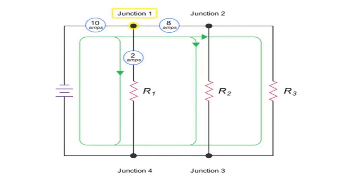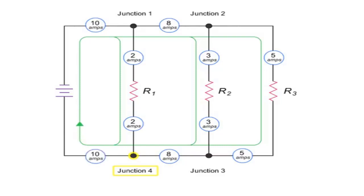The circuit branches again at junction 2, and the 8 amp current splits into 3 amps and 5 amps. As the current returns through junction 3, the 3 amp and 5 amp values recombine to give an amp value of 8. At junction 4, the 2 amps and 8 amps currents recombine to equal the 10 amps of the original source current.